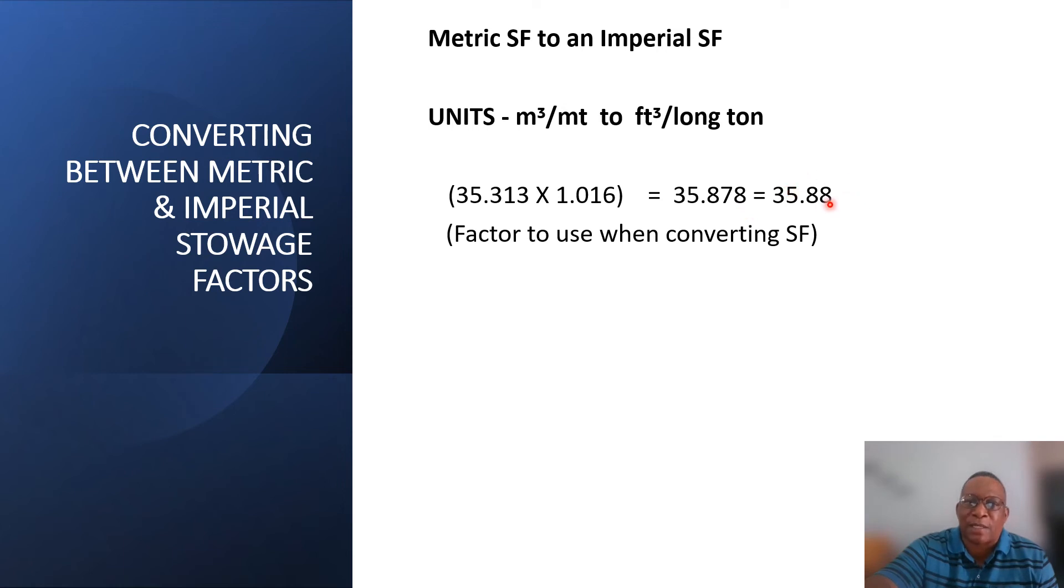Here we have one cubic meter, 35.313 cubic feet, times a factor of 1.016, which is one long ton 2,240 pounds, divided by a metric ton which is 2,204.62 pounds. And we get 35.878. Bringing it to two decimal places, we can use 35.88. This factor is what we will use when we are converting between these two storage factors.